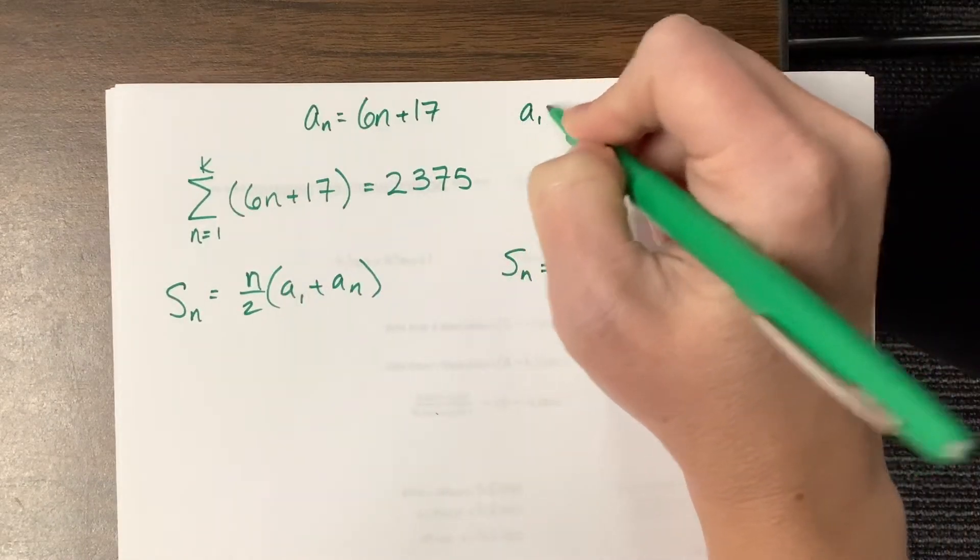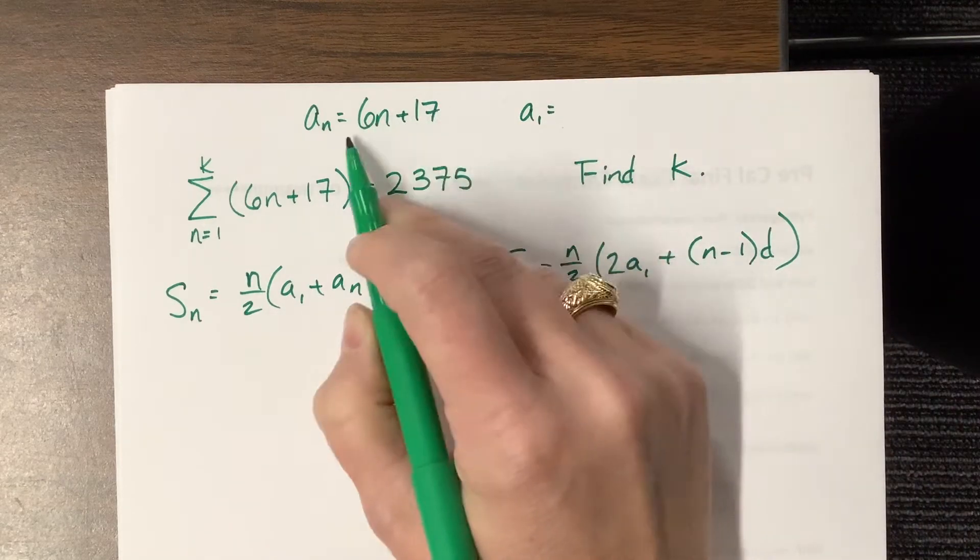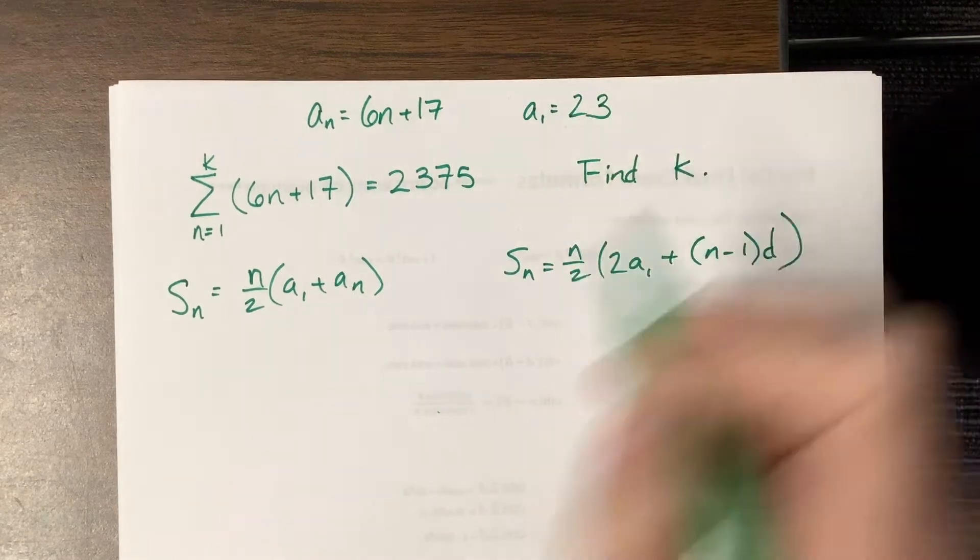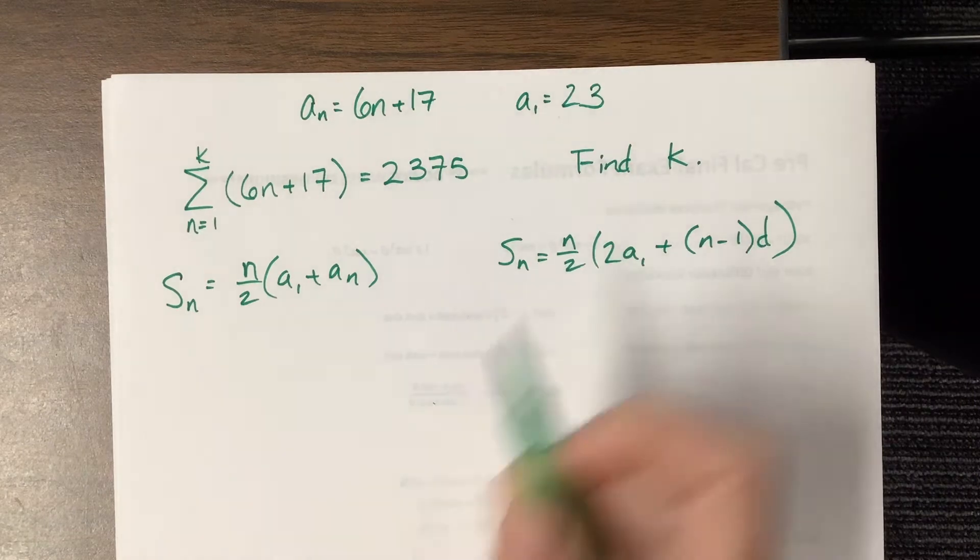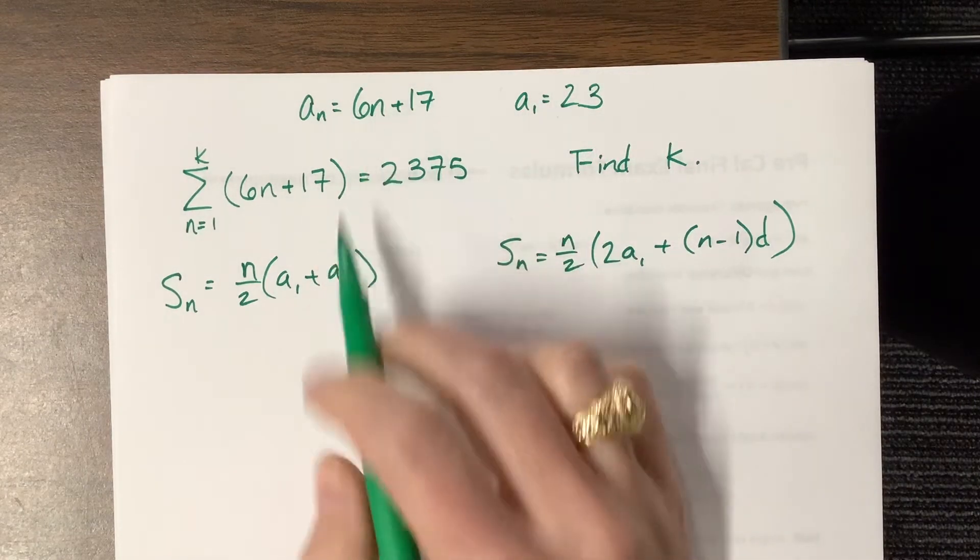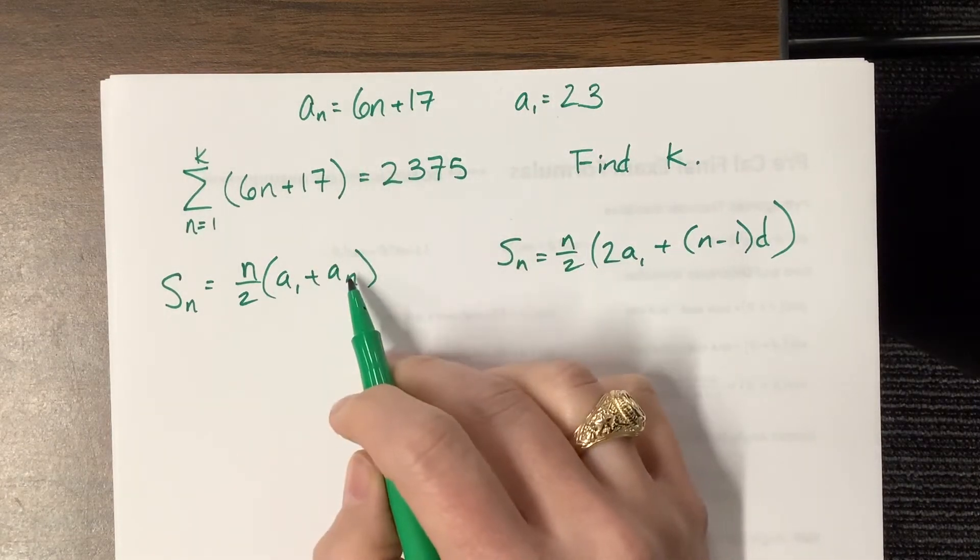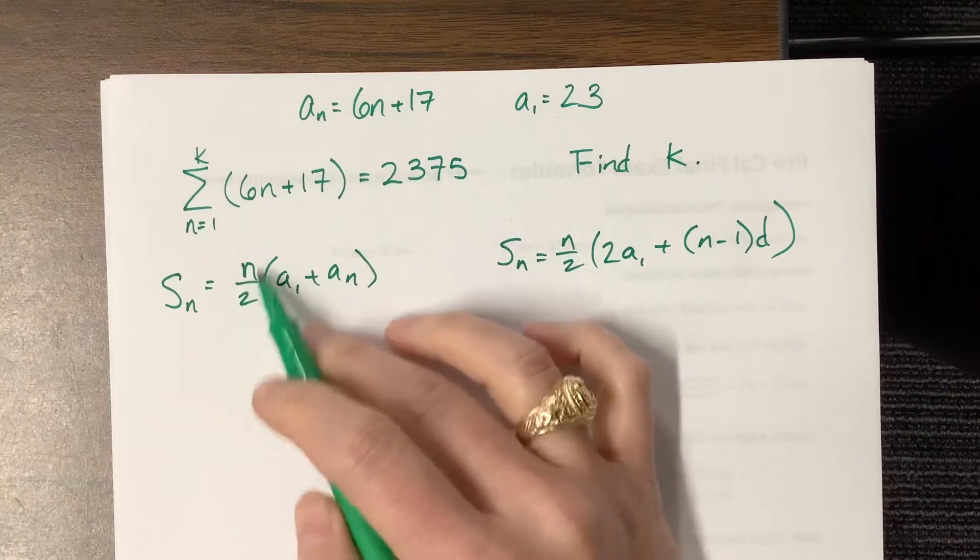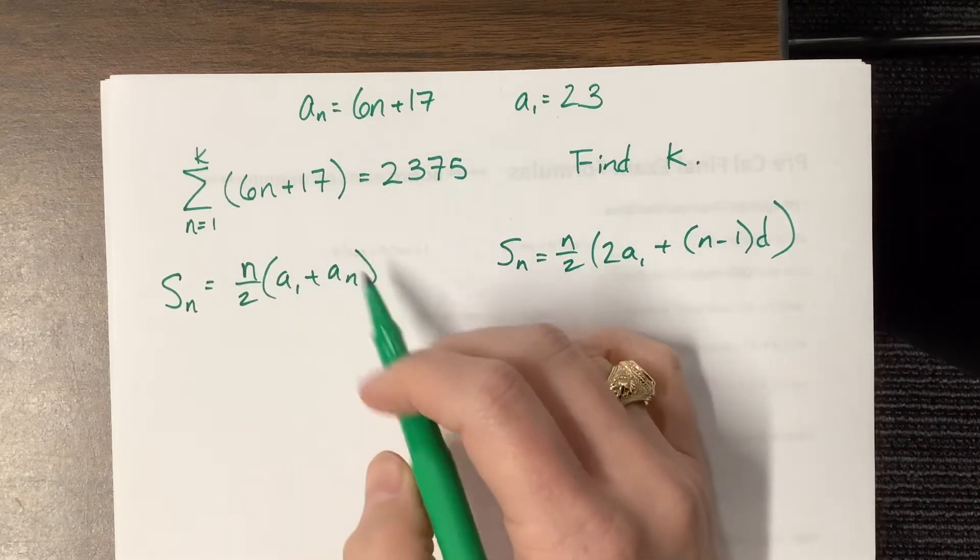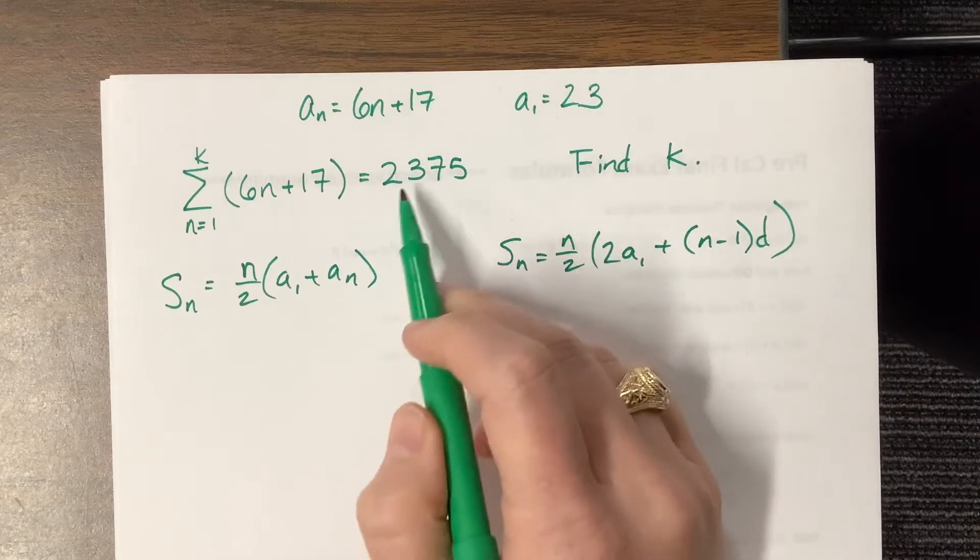So a sub 1, I plug in 1, I have 6 plus 17 is 23, I'm pretty sure. So I can use that, but then I don't know what number to plug in for here. I don't know my n, so I don't know the value of my nth term. I just know the sum of n terms.